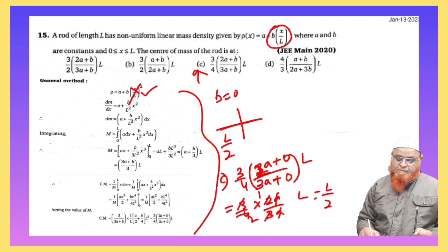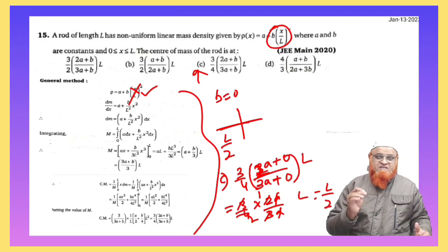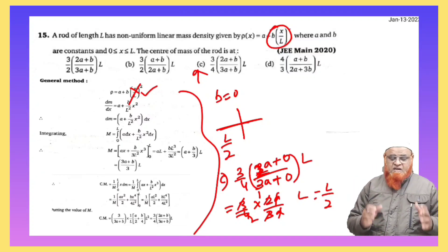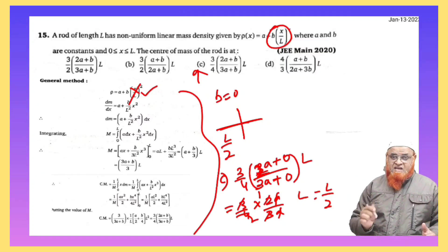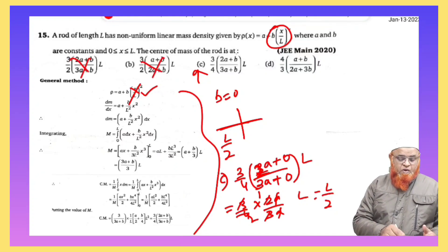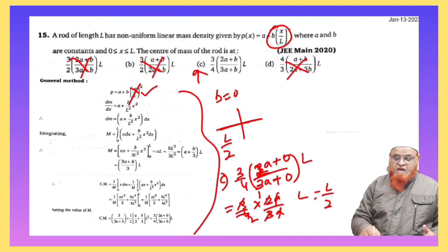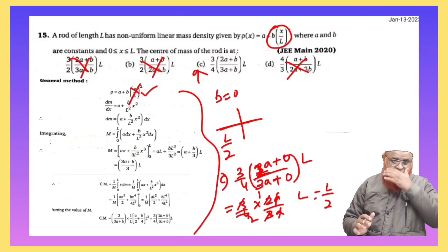Now our correct option is going to be C, our third option, because you are going to get the center of mass of the rod as L by 2. And the remaining three options are going to be wrong because if